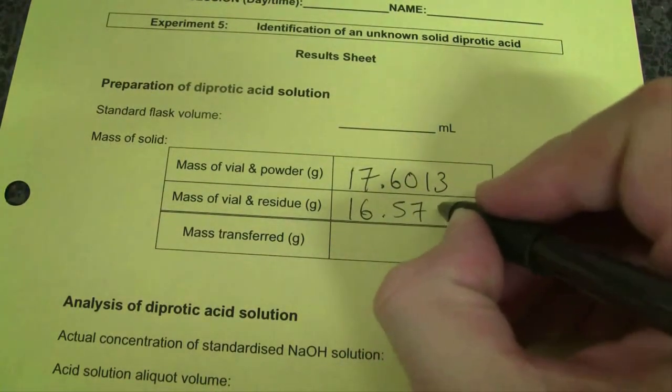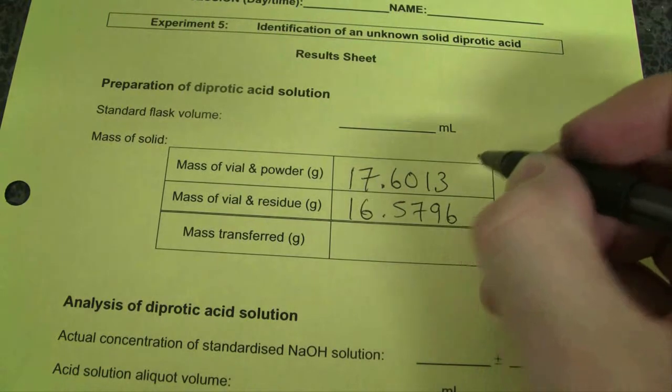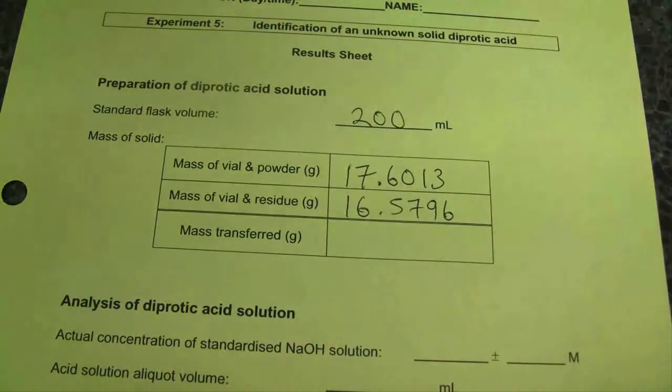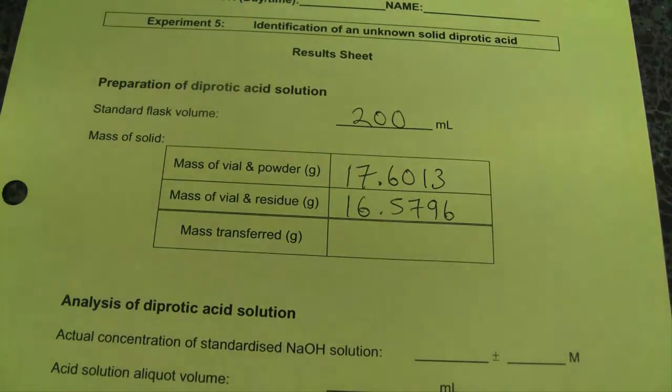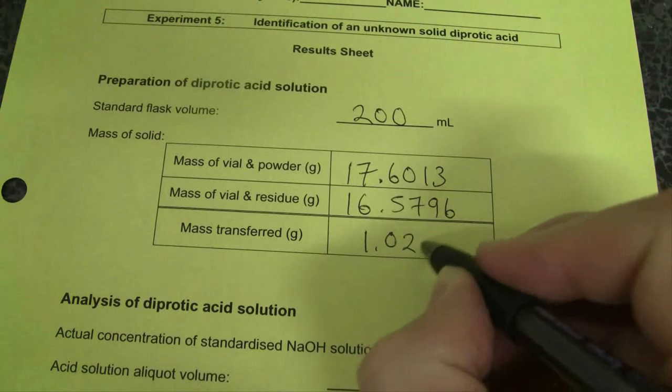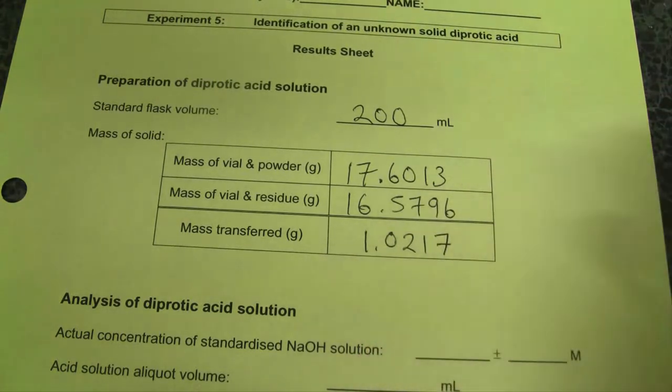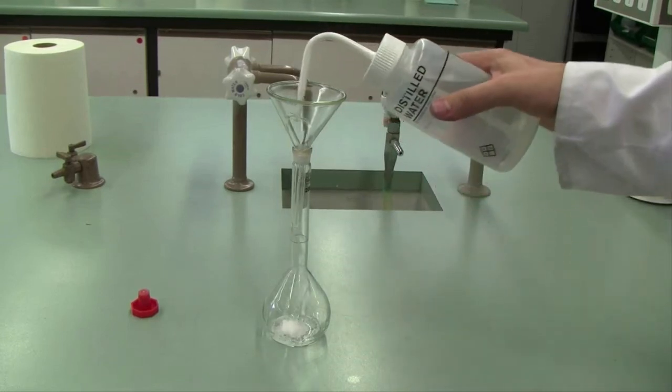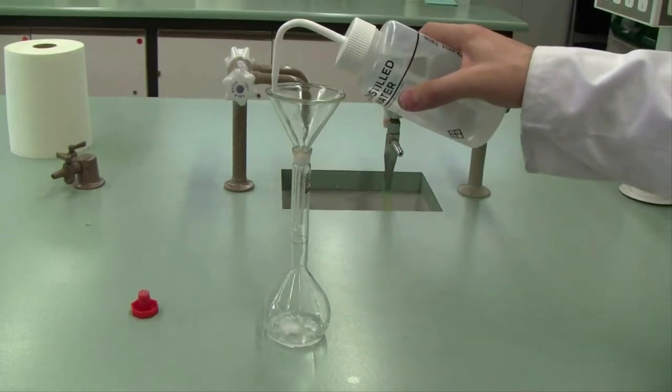And of course that mass has gone into your 200 mL standard flask. We can now calculate the mass of solid that we've added. It will just be the difference between these two masses, before and after you've added the solid. Go back out into the lab, make sure you use your distilled water bottle of course, and wash every little bit of solid into that standard flask.